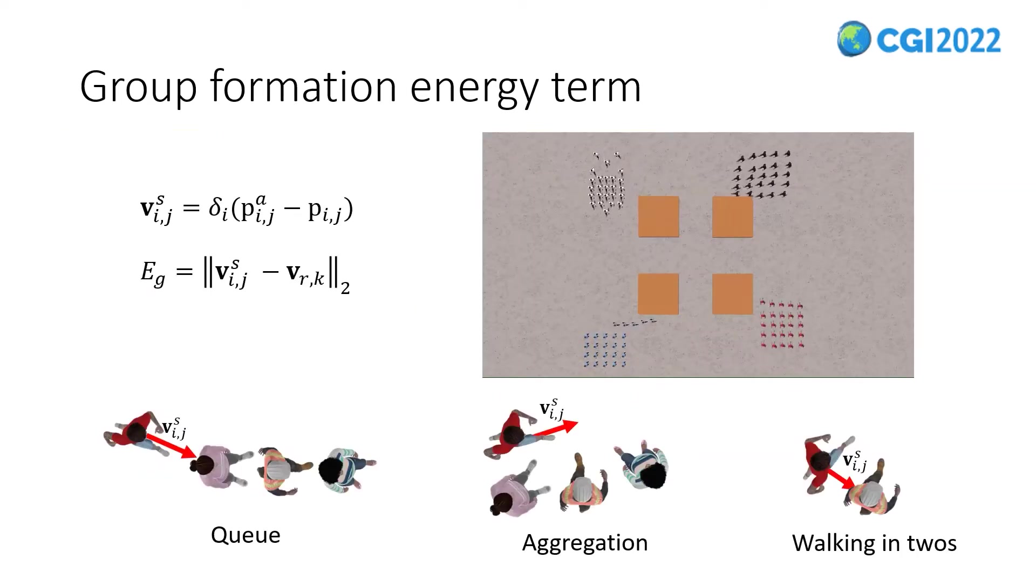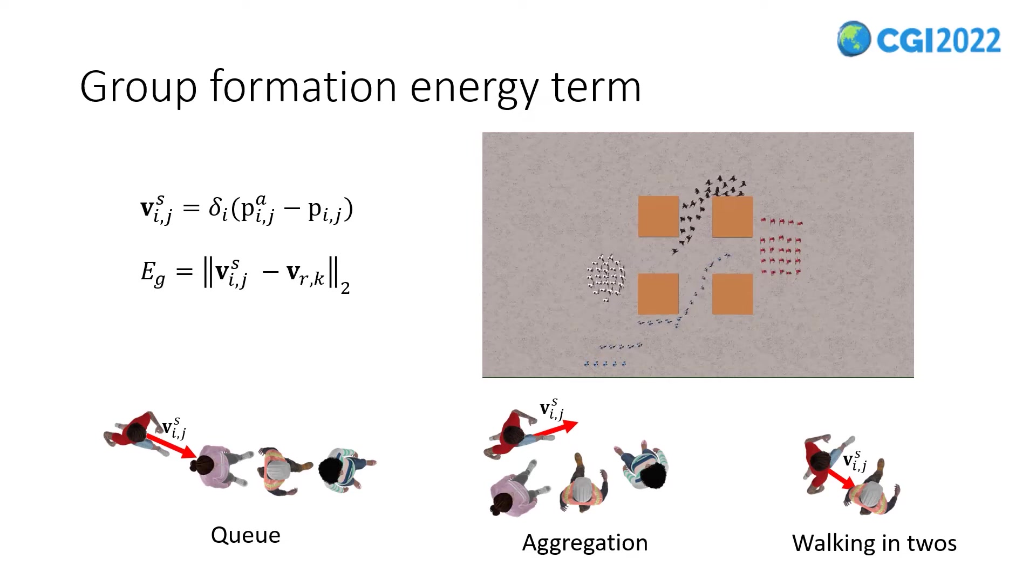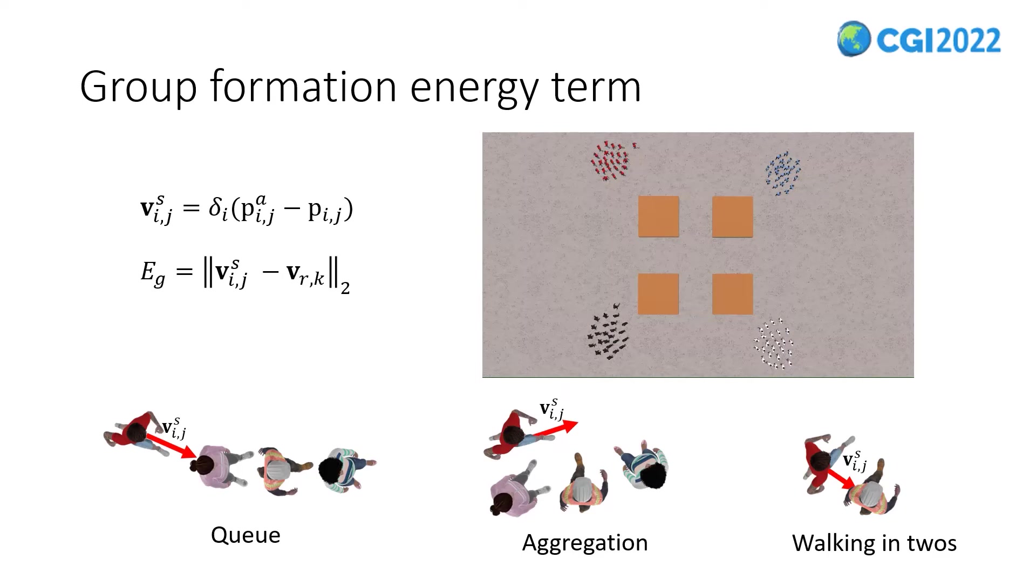In order to generate various movement patterns of the crowd in a dynamically changing environment, we define a group formation velocity and group formation energy term. Specifically, the influence of the surrounding local environment on individual decision-making is often manifested as position attractiveness. Different definitions of position attractiveness lead to different formulations of group formation velocity, thereby generating different crowd behavior patterns in simulation, such as queue, aggregation, and walking in twos. However, it is difficult to manually specify the attraction points for scenarios where the positional attraction sources of agents are different or dynamically changing.